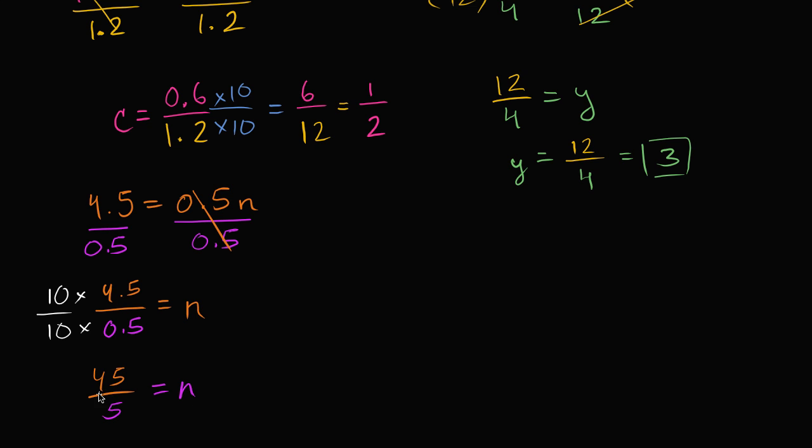And some of you might say, wait, hold on a second. Sal, you just told us that whatever we do to one side of an equation, we have to do to the other side of the equation. And here you are, you're just multiplying the left side of this equation by 10 over 10. Now remember, what is 10 over 10? 10 over 10 is just 1.